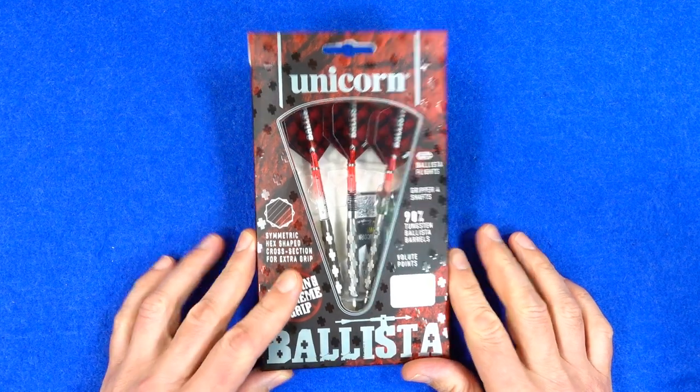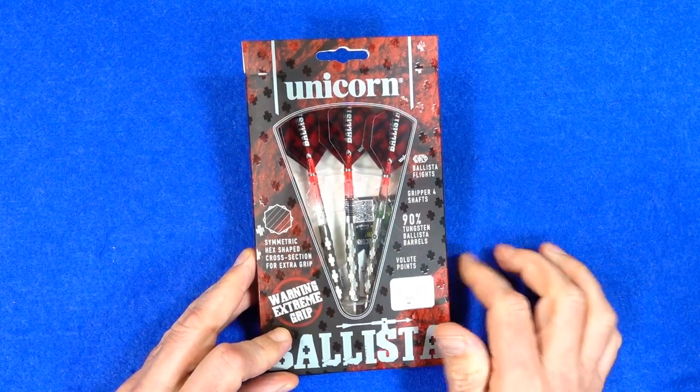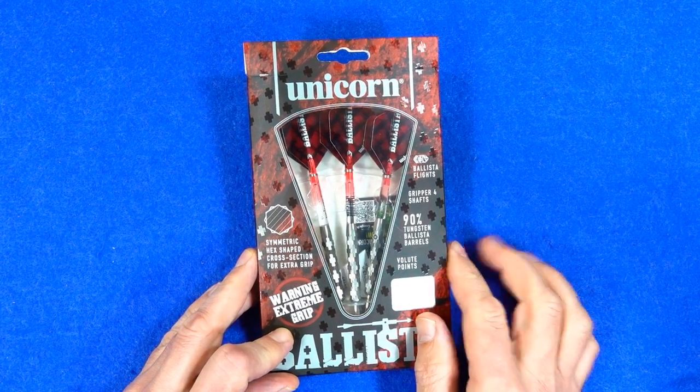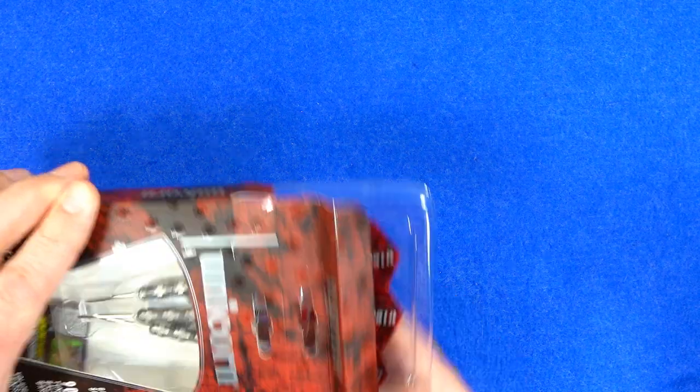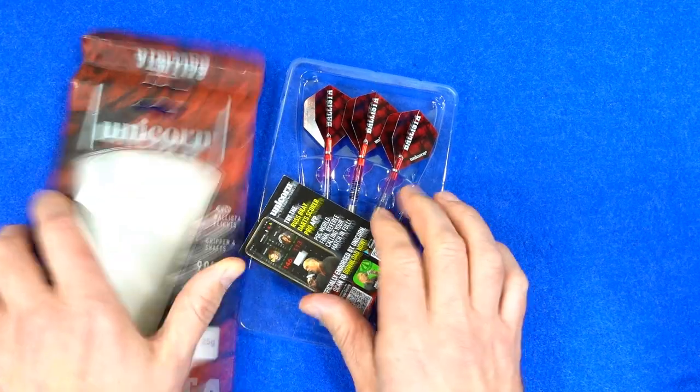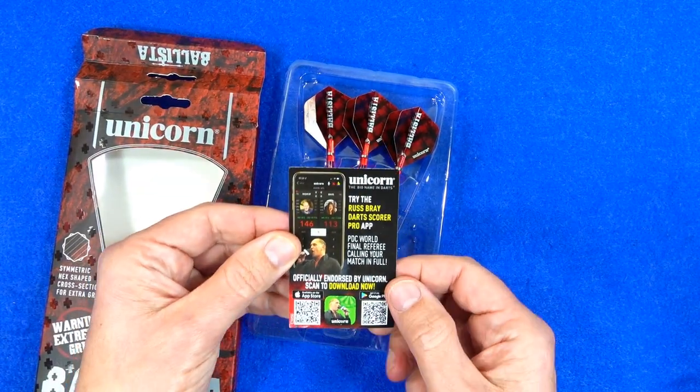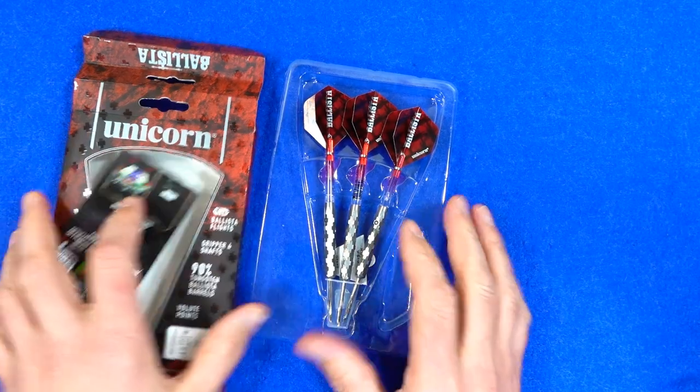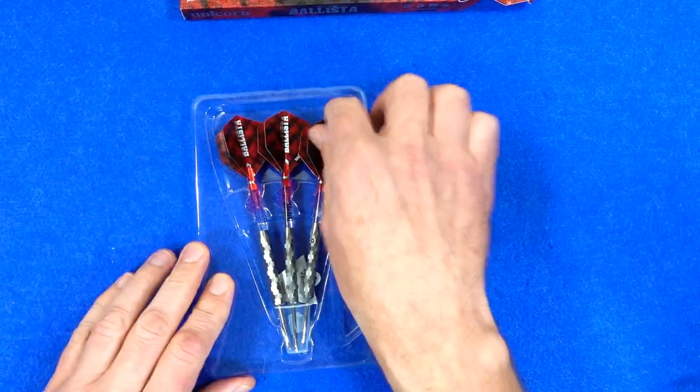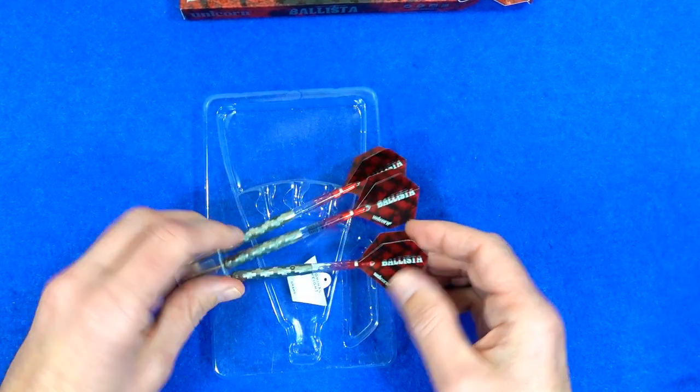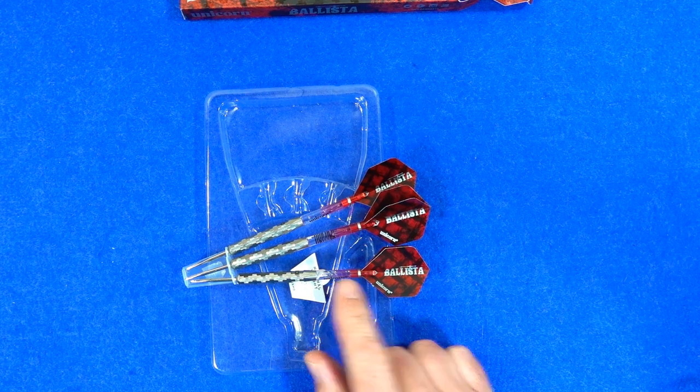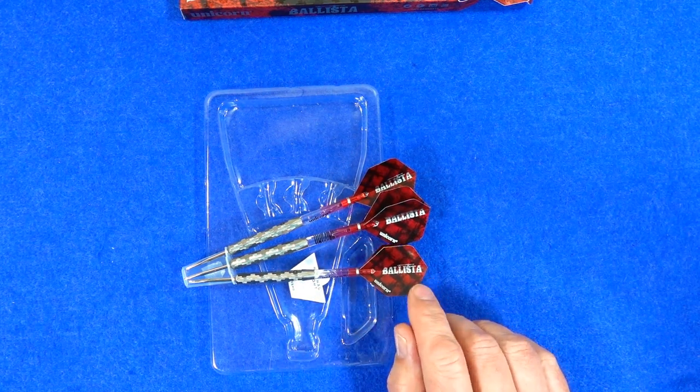The darts come in this cardboard packaging and as it says on there, warning extreme grip symmetric hex shaped cross section for extra grip. Like I said in the unboxing, it didn't feel as aggressive to me, but it may be to other people. Try the Dart Scorer Pro app. Inside there's this clear plastic tray and the little point holder, and the darts fit with the Gripper 4 two-tone stems and the Ballista Ultrafly flights.